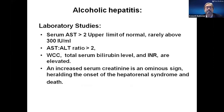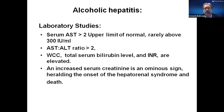We usually see the serum AST greater than two times the upper limit of normal, more so than the ALT, with a ratio of one and a half to two, but the enzymes are rarely above 300. The white cell count, bilirubin, and INR are elevated. When you see an increased creatinine, that's a very bad sign, because these patients usually die from renal failure and/or infection. When I see a creatinine going up, I get very concerned they're developing hepatorenal syndrome with a very poor outcome.